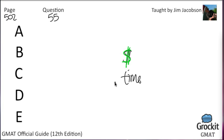Choice A: attracting middle-aged customers unlikely to submit claims for benefits for many years. If the middle-aged customers are not elderly, they do not have diseases that afflict the elderly, and they don't get sick for many years, but they continue to pay premiums into the insurance for many years — that is something that would mitigate the losses. Maybe they don't lose money at all. Let's keep choice A and keep reading.